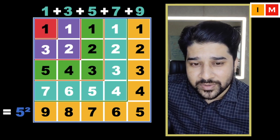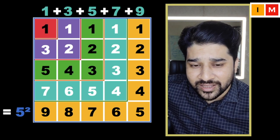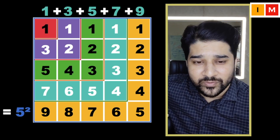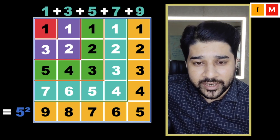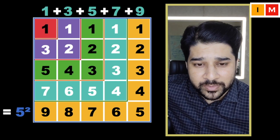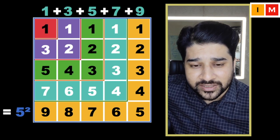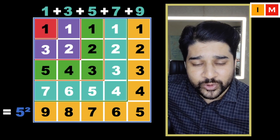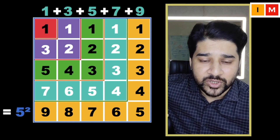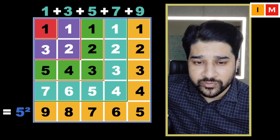So if you notice, we added 3, then 5, then 7, then 9. What are these numbers? 1, 3, 5, 7, 9 — we call them odd numbers. 1 being the first odd number, 3 being the second, 5 being the third, 7 being the fourth, and 9 being the fifth odd number.